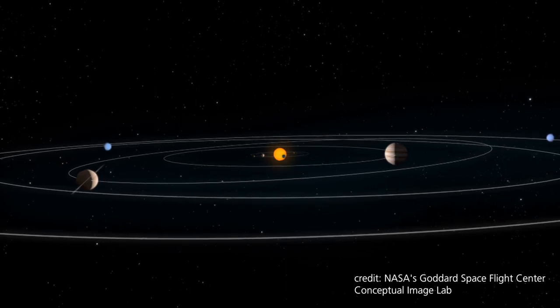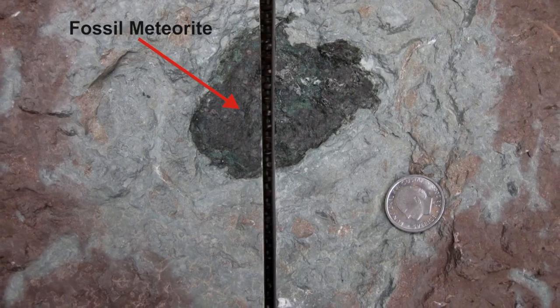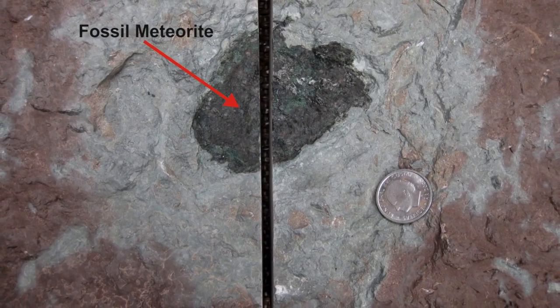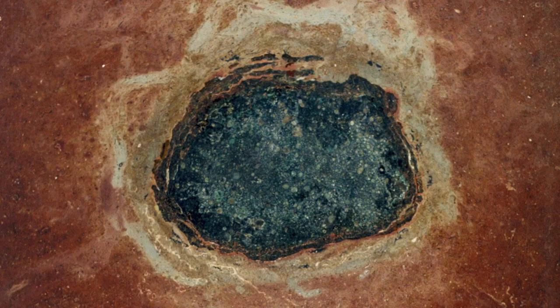But our really surprising result is that it was completely different meteorites — the meteorite flux was dominated by other meteorites than those that are common on Earth today. In our sample, we find many meteorites that are very rare on Earth today.